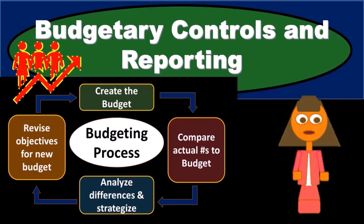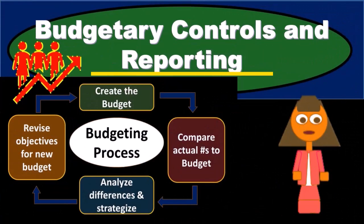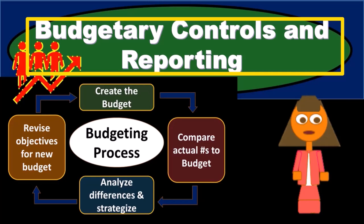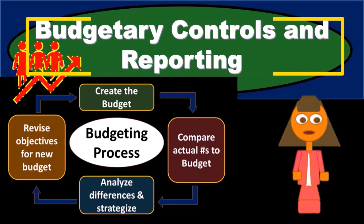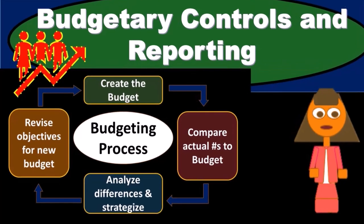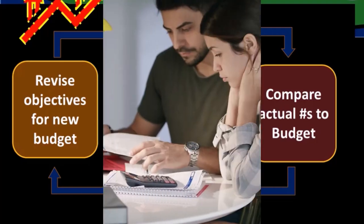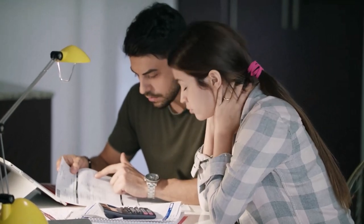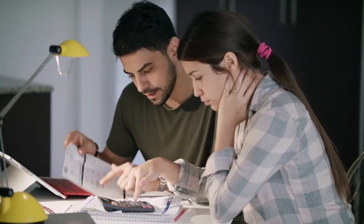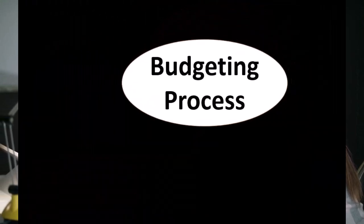In this presentation we will take a look at budgetary controls and reporting. In prior presentations we took a look at the creation of the master budget, a static budget, and the components of the master budget. Here we're going to be focusing more on the flexible budget, but we want to review some of the components of the budgeting process and then go into those components more in depth, concentrating on the flexible budget.